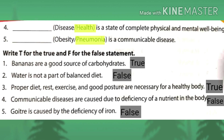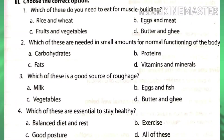Fifth: goiter is caused by the deficiency of iron — false. Goiter is caused by deficiency of iodine. Now we will start MCQs. First: which of these do you need to eat for muscle building? The answer is eggs and meat, as they give us protein, which is essential for growth and muscle building.